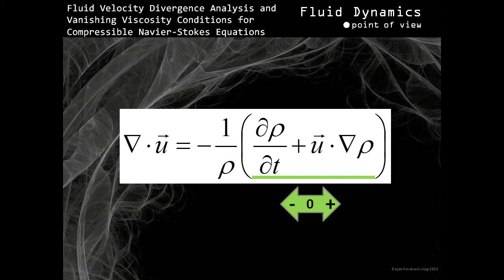Based on that, both the first as well as the second term within the brackets can have values ranging from negative, through zero, to positive values. Therefore, when two terms are combined together, the result is a scalar function whose value, depending on position in space and point in time, can be negative, zero, or positive. What that really means is that fluid velocity vector field divergence can have resulting scalar values, depending on position in space and point in time, ranging from negative, through zero, to positive scalar values. Of course, the resulting scalar value can be zero as well, meaning that velocity vector field divergence can be zero.